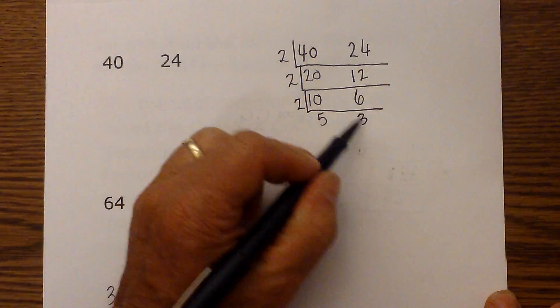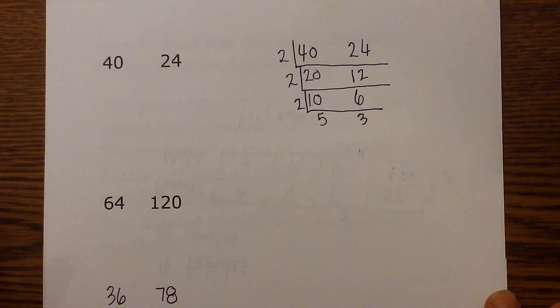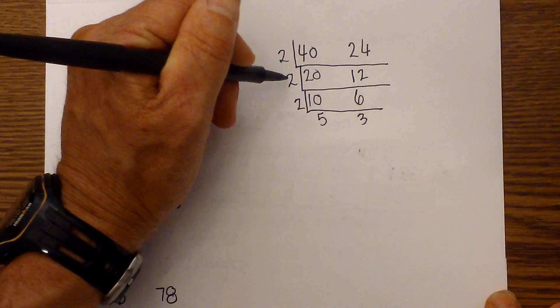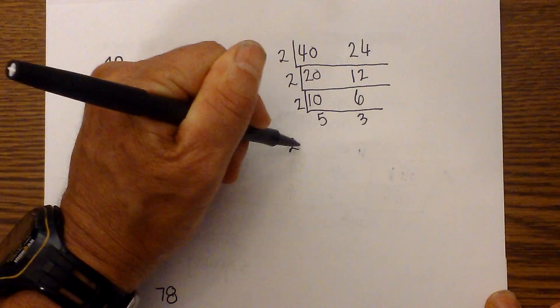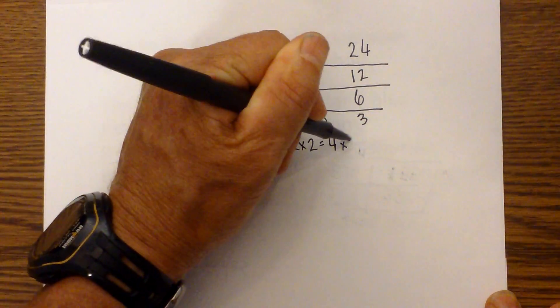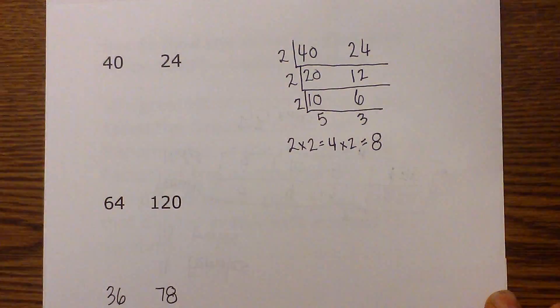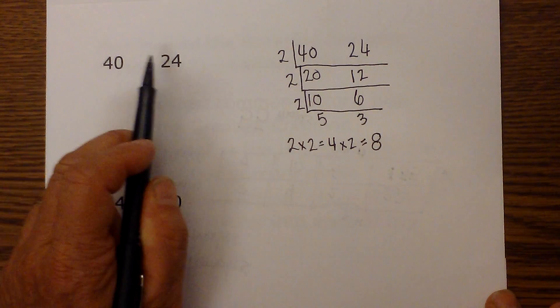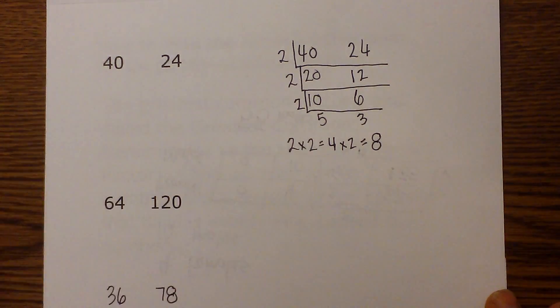Now I am down to two prime numbers. So what I will do is to get the greatest common factor, I just multiply what is on the outside and that is 2 times 2 which equals 4 times 2 which equals 8. So the greatest common factor of 40 and 24 is 8.